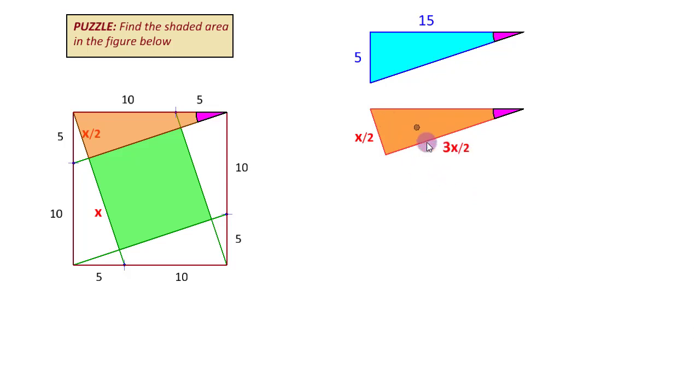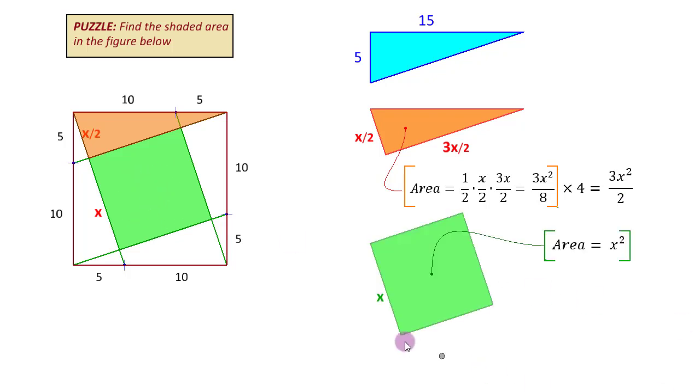We can find the area of this triangle now. It will be half x by 2 into 3x by 2, that gives us 3x square upon 8. There are four such triangles, so multiply this by 4 and that gives us the area of the white space. We are getting it in terms of an unknown x, but that is still good enough because we know the area of even this square in terms of the same unknown. Its side is x, so its area is going to be x square.